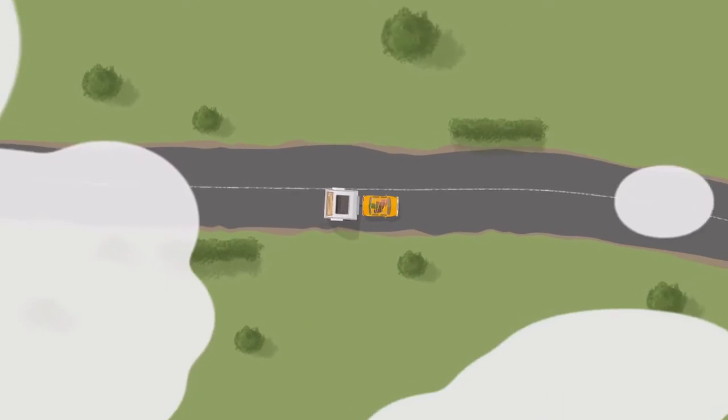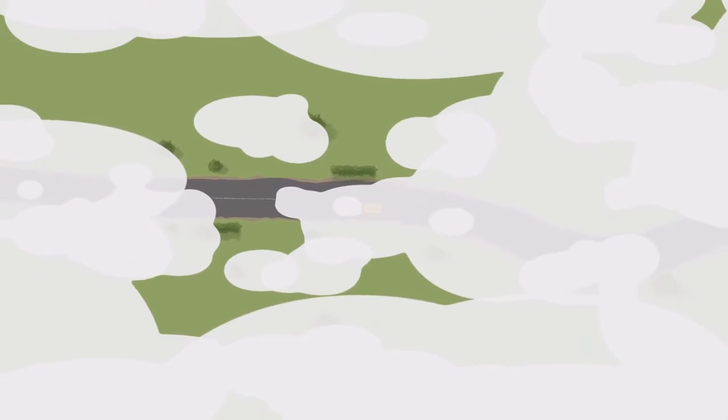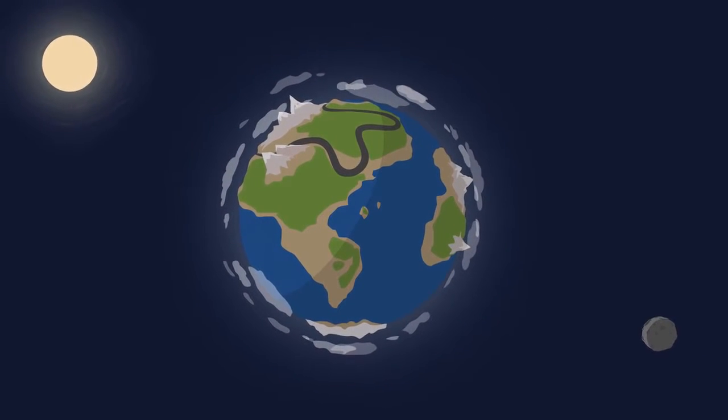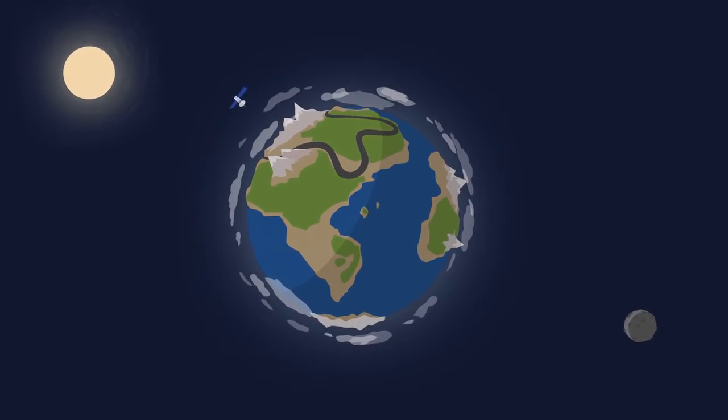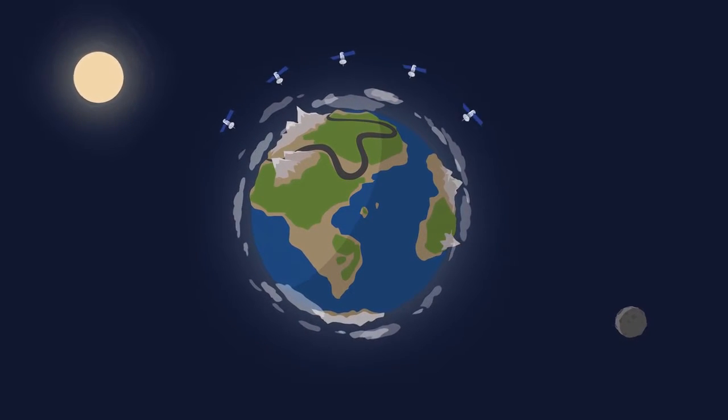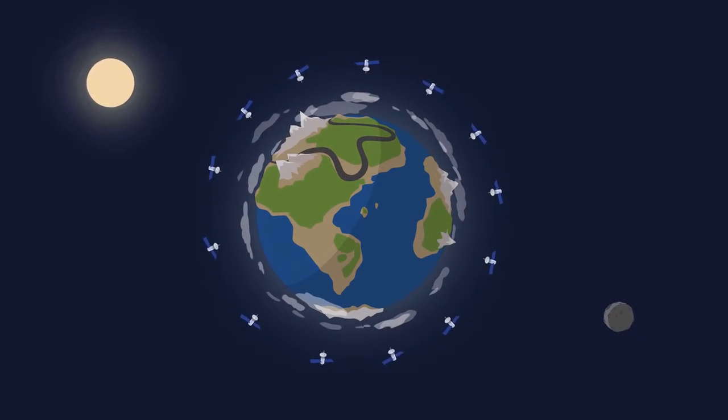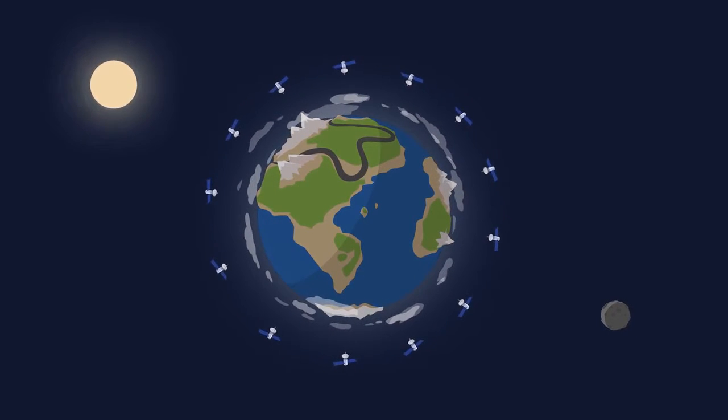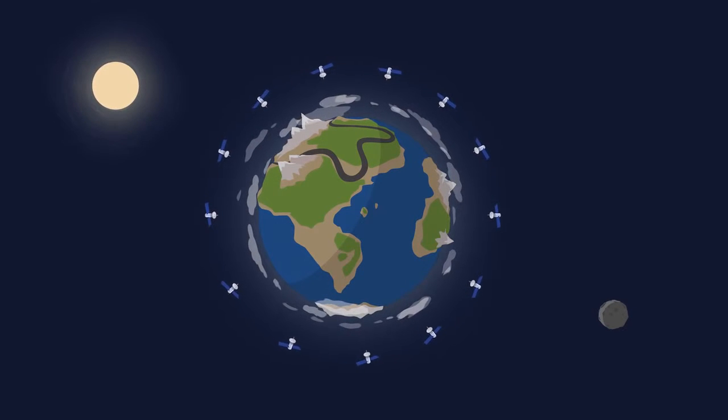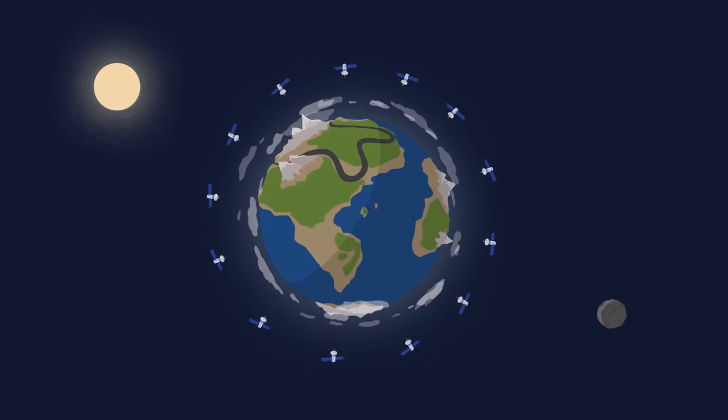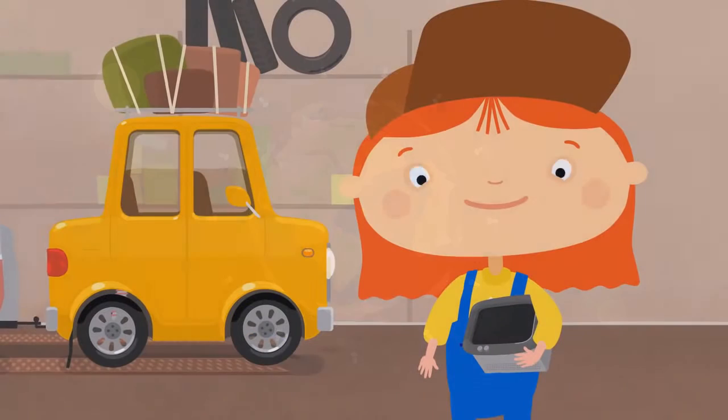High above us, above the clouds, above the earth itself, there are satellites. They continually transmit signals to the ground, giving information about the GPS's position. The GPS receiver receives this signal. The computer processes it and shows the position of the car in which it is installed.